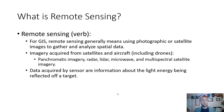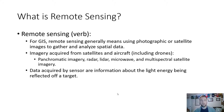The data acquired by sensors are information about the light energy being reflected off a target. Whenever a photograph is taken or an image is sensed, all it is is a reading of the photographic signature or the light signature bouncing off of any given object.